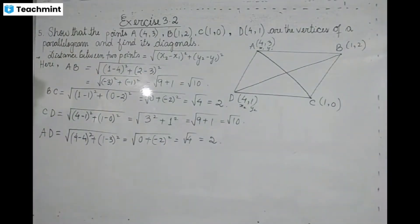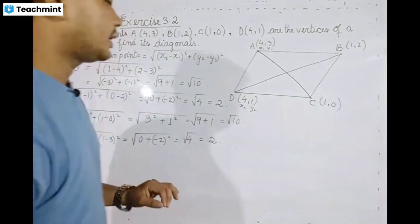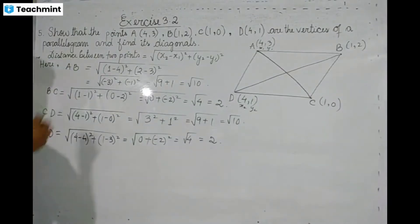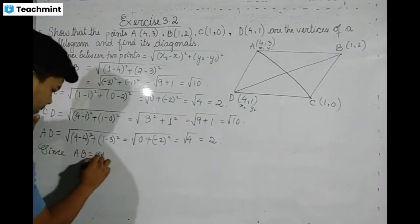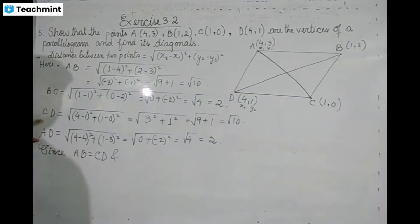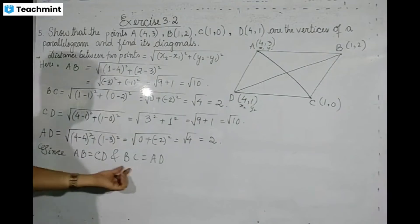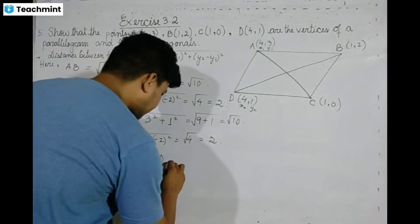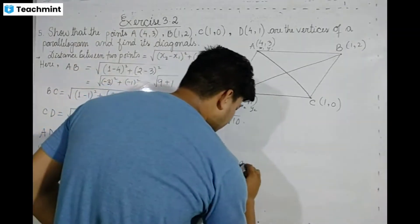So we have found all four sides. AB equals root 10, CD equals root 10 — opposite sides are equal. BC equals 2, AD equals 2 — opposite sides are equal. In a quadrilateral, since opposite sides are equal, it is a parallelogram. Therefore ABCD is a parallelogram.